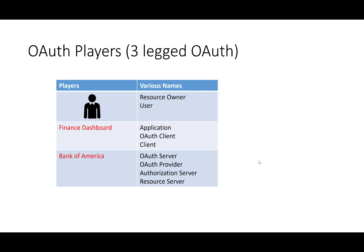In this scenario, there are three or four major players. You have the resource owner — that's the user, John Doe. You have FinanceDashboard, sometimes referred to as the application, the OAuth client, or simply the client, because FinanceDashboard is the client making the request to the server. And Bank of America is referred to as the OAuth server or OAuth provider, also called the authorization server and the resource server.